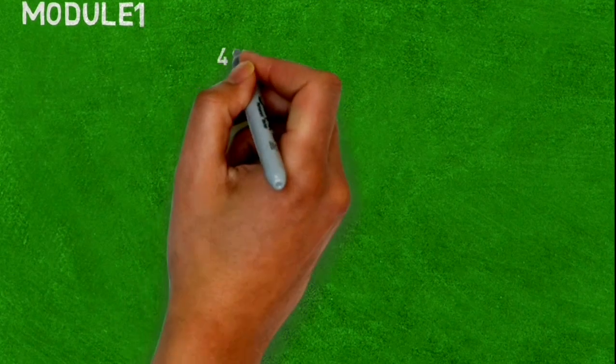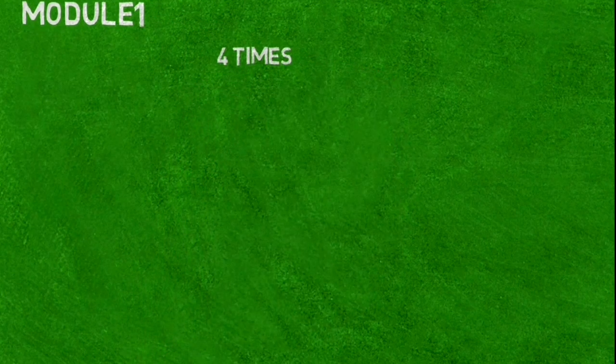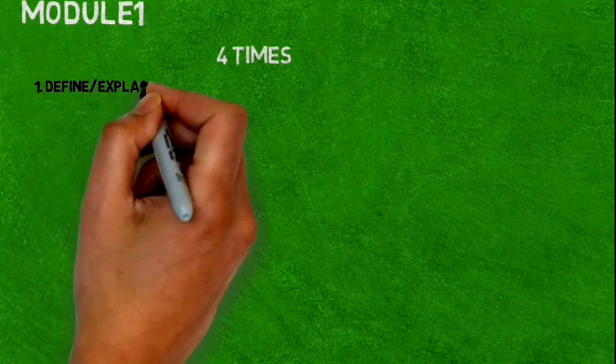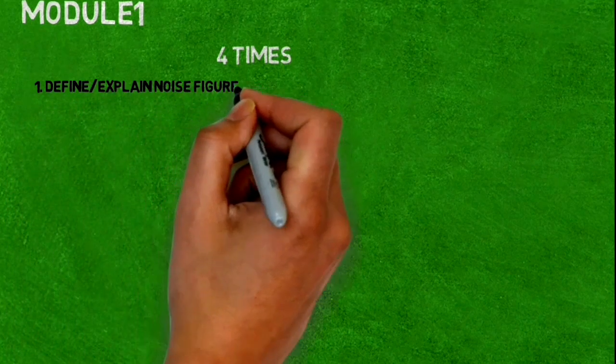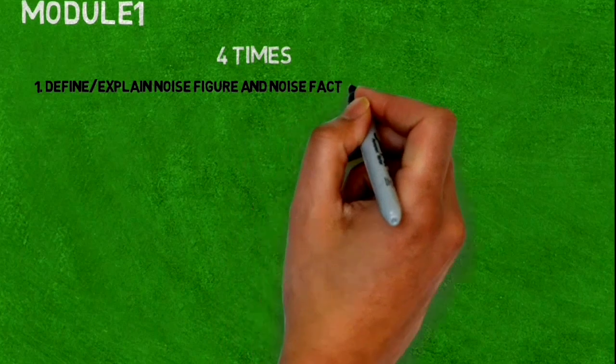Let's see Module number one. Four times repeated questions are: first, define or explain noise figure and noise factor. It comes for five marks.